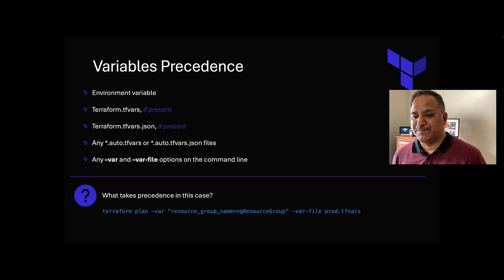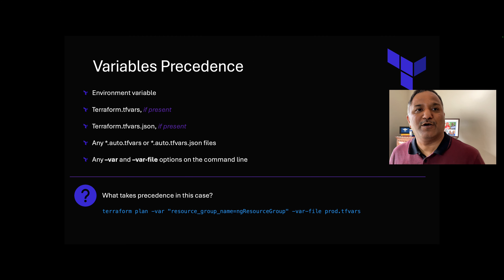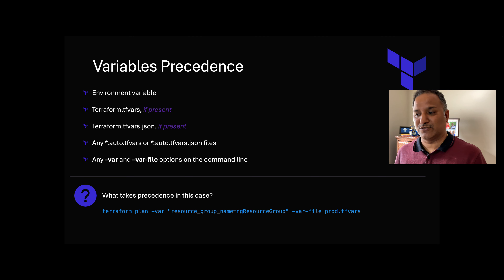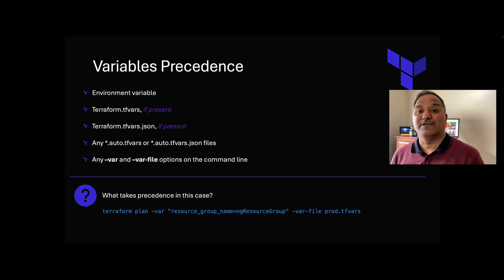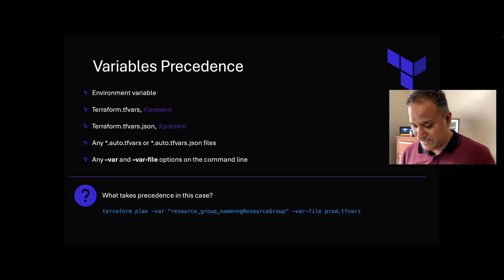Here is a tricky question for you as homework: if I switch the order of parameters and run 'terraform plan -var resource_group_name=ng_resource_group' followed by '-var-file prod.tfvars', which value would it pick — the one from the command line which is ng resource group, or the one from the var file? Let me know in the comments what you think the output will be.